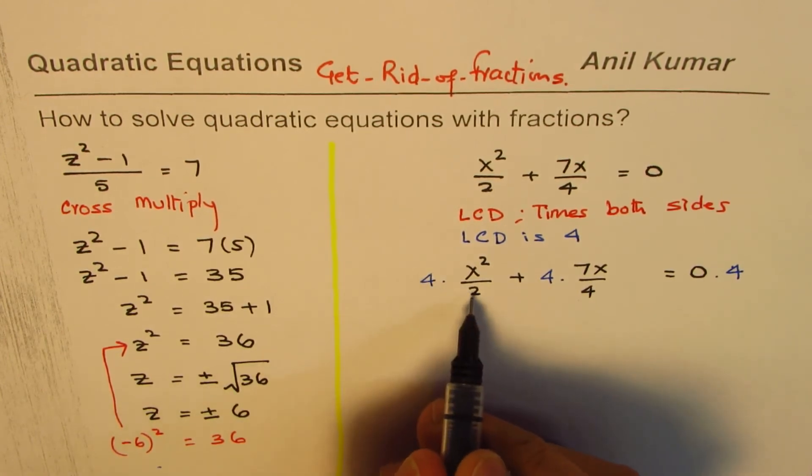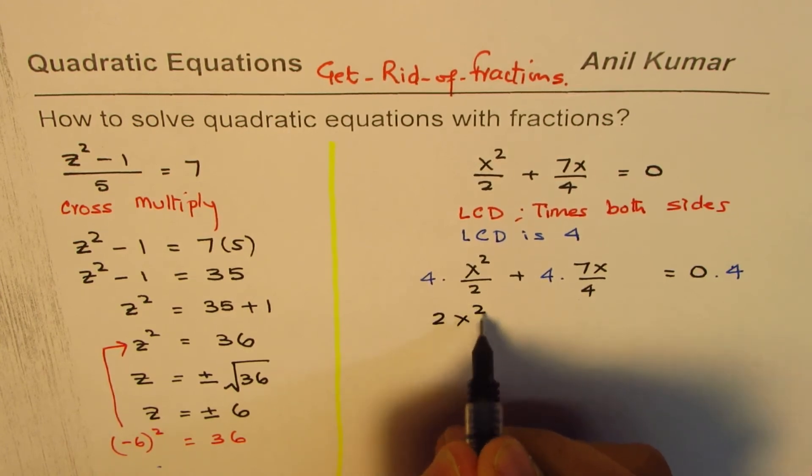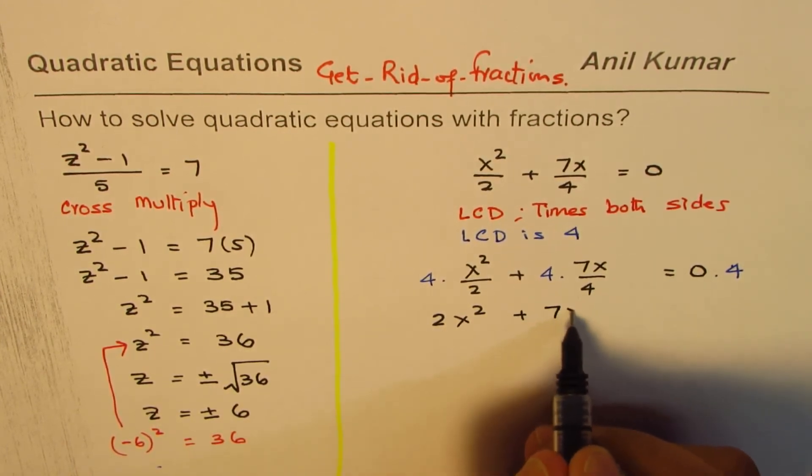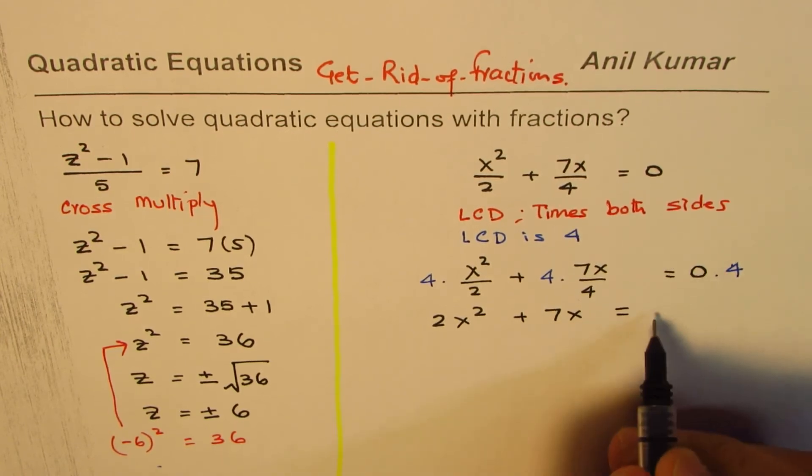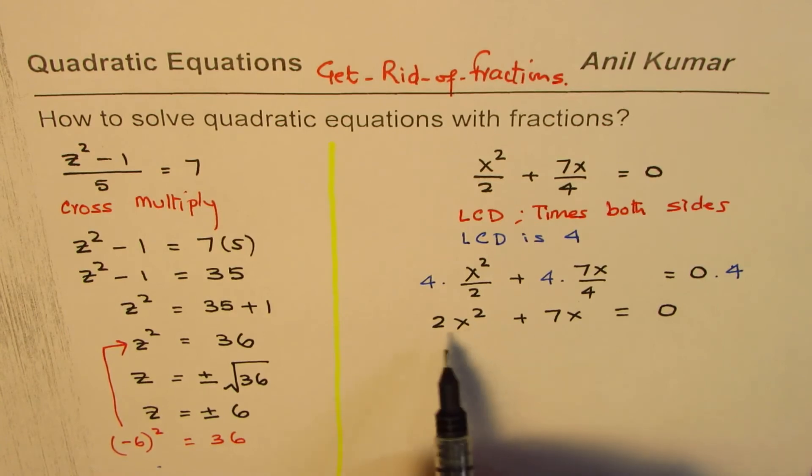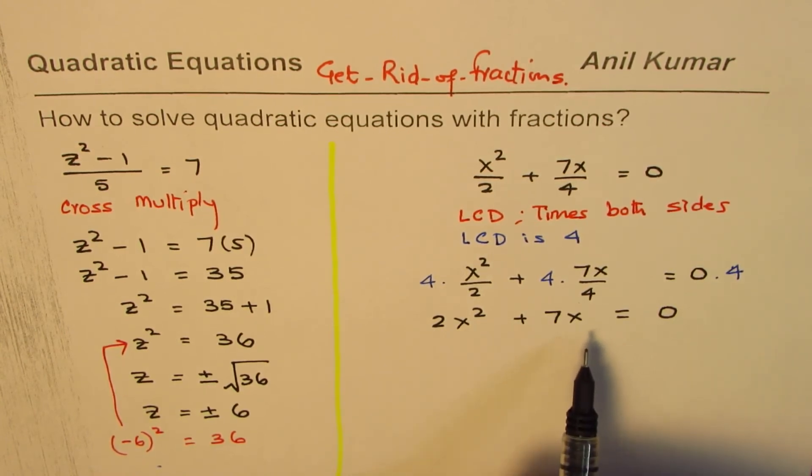4 can be divided by 2, so we can write this as 2x squared. 4 can be divided by 4, we get 1, so we get plus 7x equal to 0. At this stage, when you have this quadratic equation, the best way to solve it further is to factor.